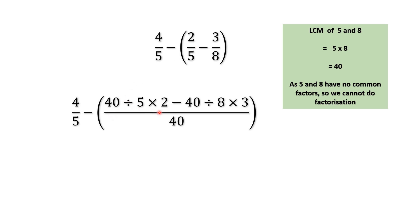So 40 divided by 5 into 2 minus same thing 8 multiplied by how much is 40 that we get by dividing 40 by 8 and the answer will be multiplied to its numerator that is 40 divided by 8 into 3. In the next step we can see 8 is multiplied to 2 and 5 is multiplied to its numerator that is 3.